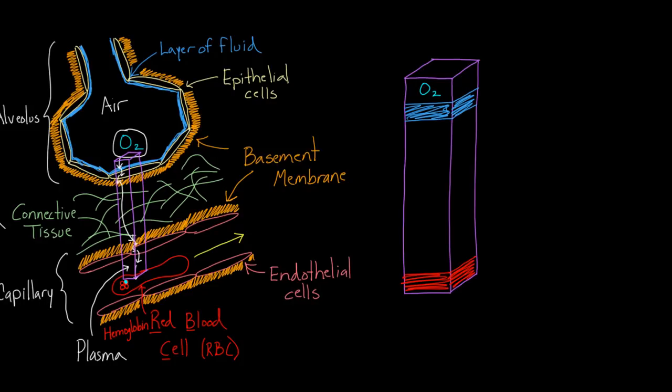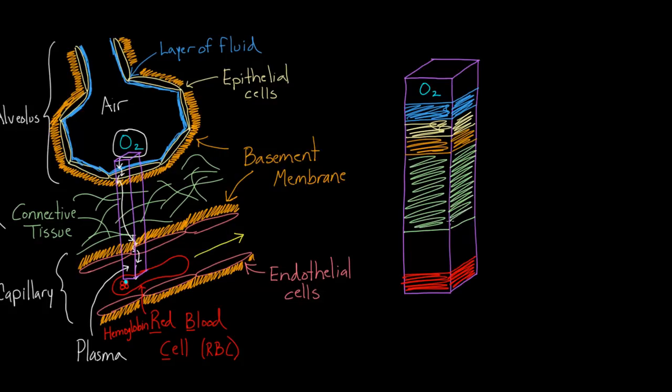It gets from that gas phase through the liquid layer into the next layer, which is the epithelial cell. That's the second layer. The third layer was the basement membrane. Then you have all that connective tissue, a nice thick layer of connective tissue. That's the green. Remember the basement membrane and the connective tissue are both chock full of proteins, different types of proteins, but both there for structural support.